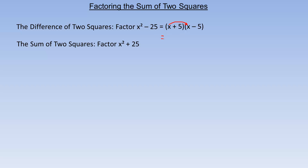So x times x is x squared, and if we multiply x by negative 5, we get minus 5x, and 5 times x is a plus 5x, and negative 5 times negative 5 is minus 25. So these are opposites, so they add to zero, so we do get — as the check — x squared minus 25. So it does work.